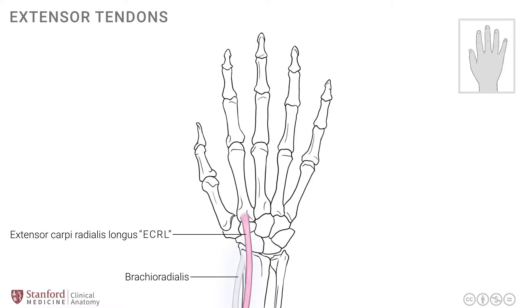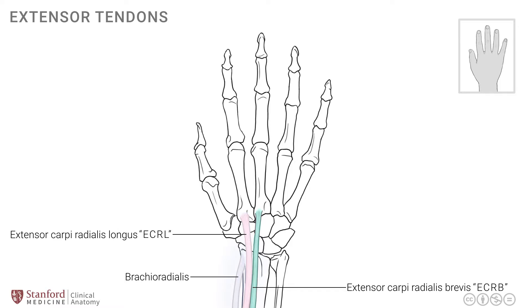There is another muscle immediately adjacent to the ECRL known as extensor carpi radialis brevis, or ECRB, and it goes down to the base of the third metacarpal. These two muscles form strong extensors of the wrist joint and have a slight action of radial deviation as well, and therefore we'll have a balancing muscle that we will look at momentarily.